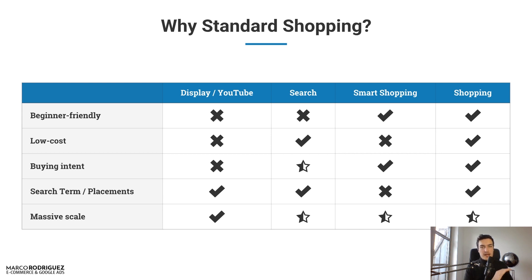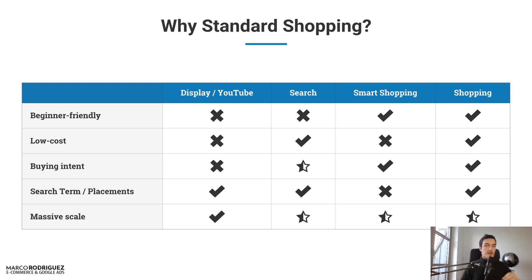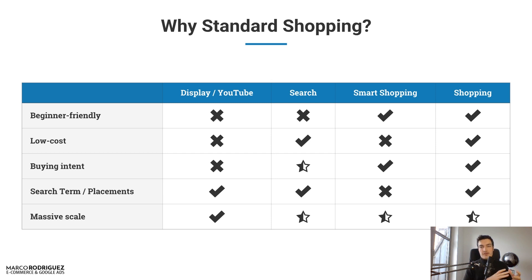I had a client who was already doing a crazy amount of sales — six figures per month — but had been using smart shopping ads ever since they existed. We had zero insights into any search query. Even though this person made several million dollars, we had no idea what people were actually looking for. You should avoid this because you want to build negative keyword lists, improve, and find out what people are searching for. Start with standard shopping — then move to smart shopping or search later on.